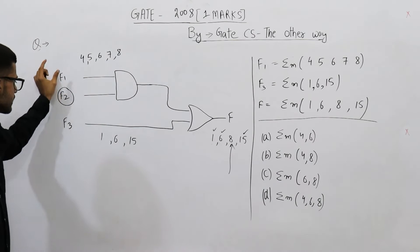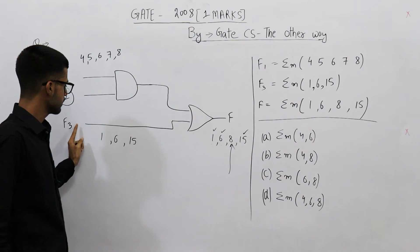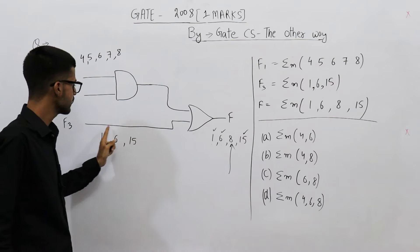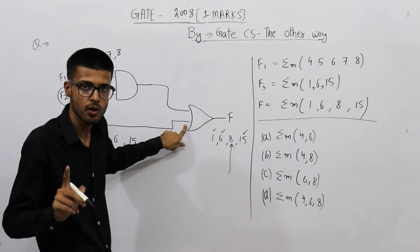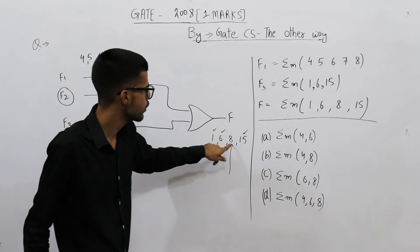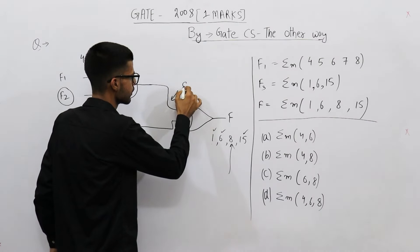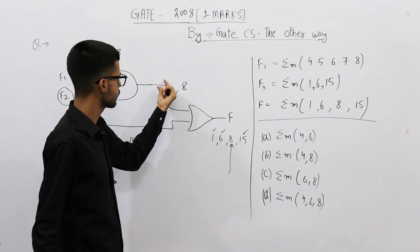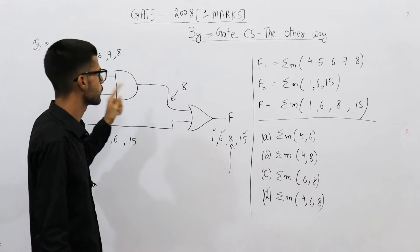But what about this 8? Whenever input to these functions is 8, f3 will not output high. So this input of the OR gate is not high on 8. But the output must be high. That means we need an 8 here. So this wire must contain a positive voltage whenever input is 8.